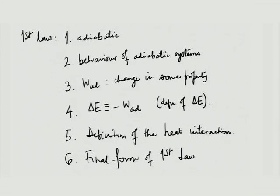Let us continue with a quick revision. The first law is our understanding of the behavior of adiabatic systems. We defined what is meant by adiabatic systems, then generalized their behavior and understood that W-adiabatic is independent of path, so it should represent a change in some property. That property we took as energy, to be consistent with other branches of physics, giving the definition of delta E as minus W-adiabatic — minus being a matter of sign convention.